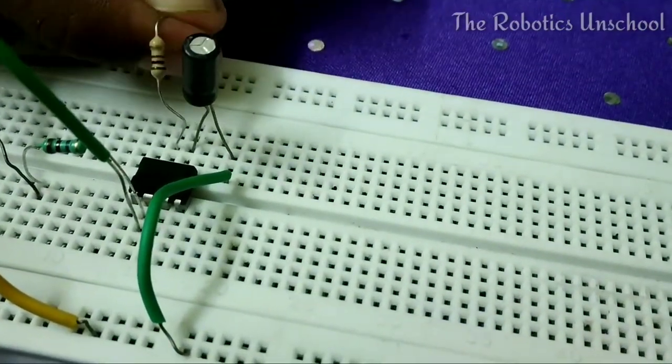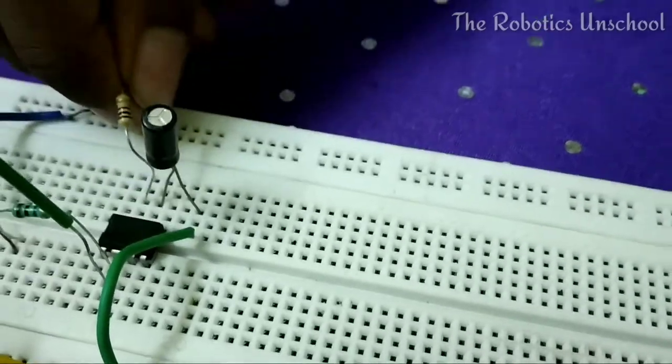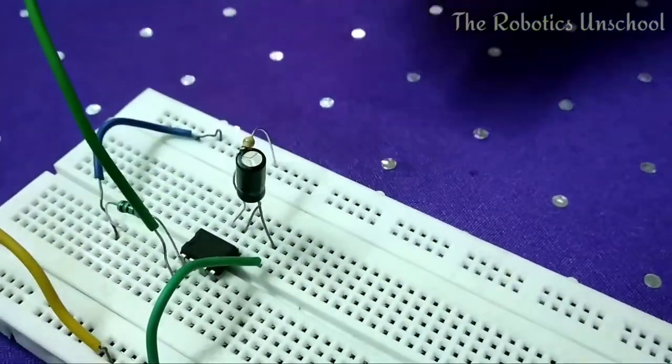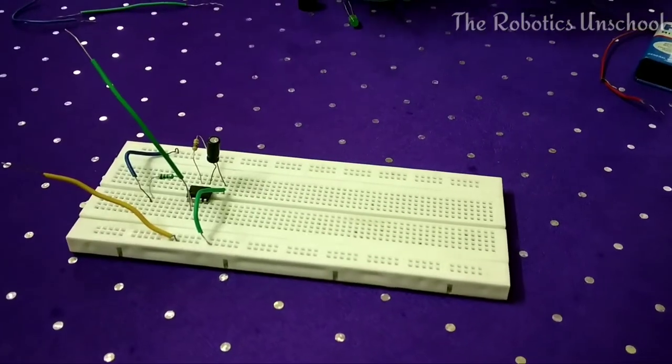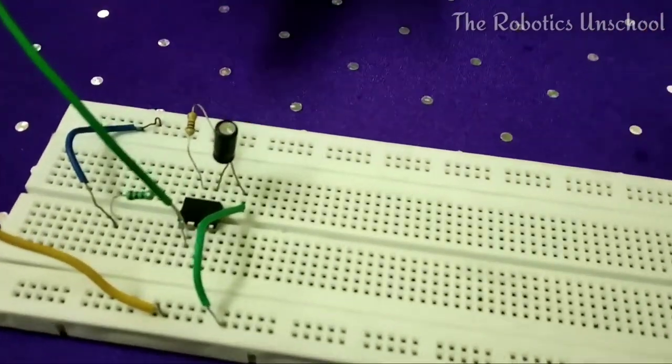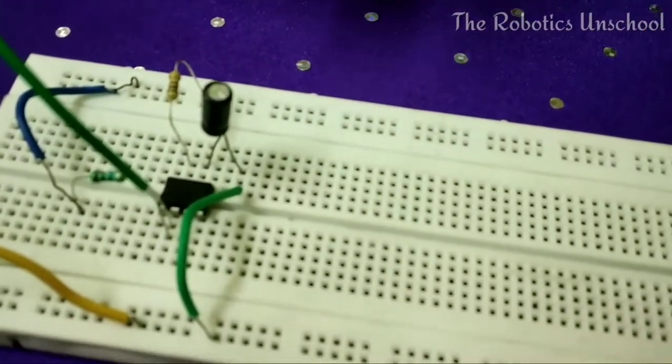Connect the 100k resistor to the positive terminal. Now we have to interconnect pin 6 and pin 7 as per the circuit.